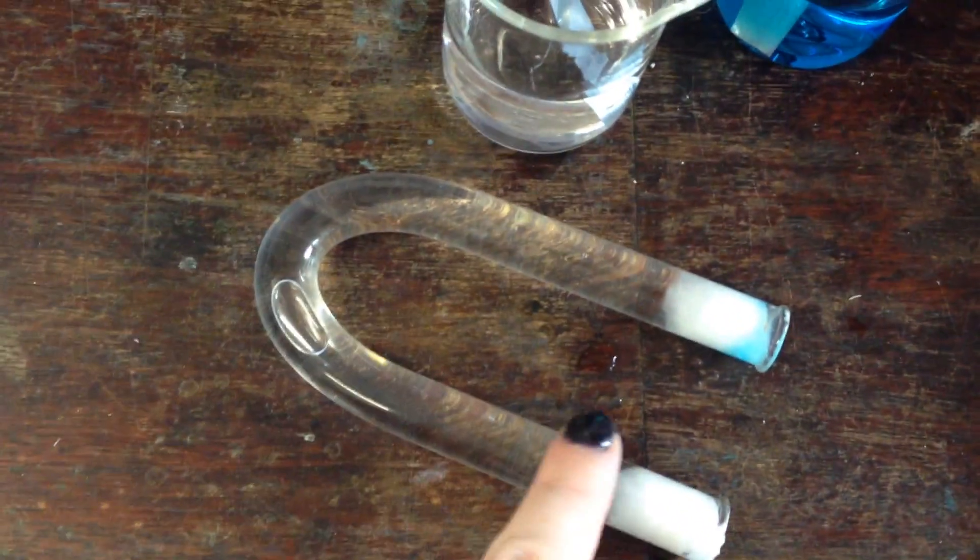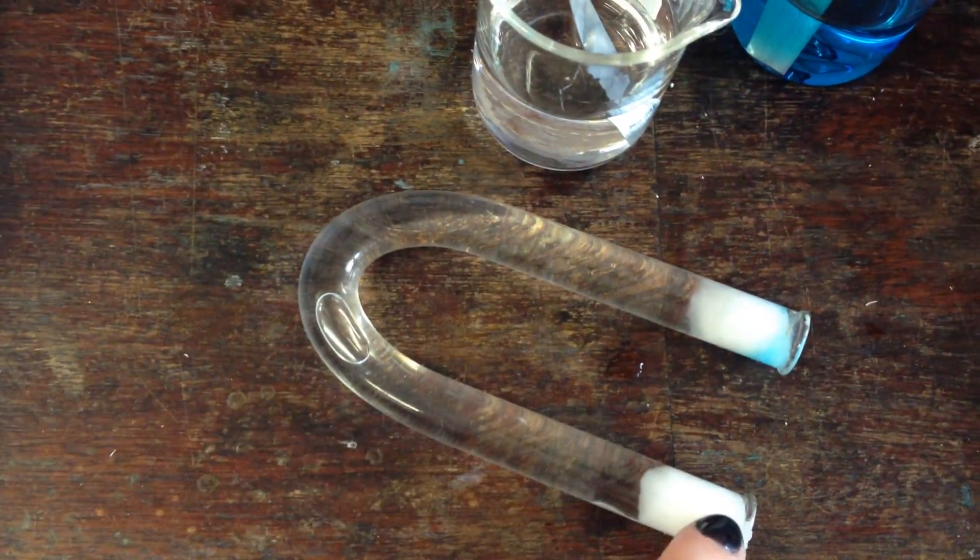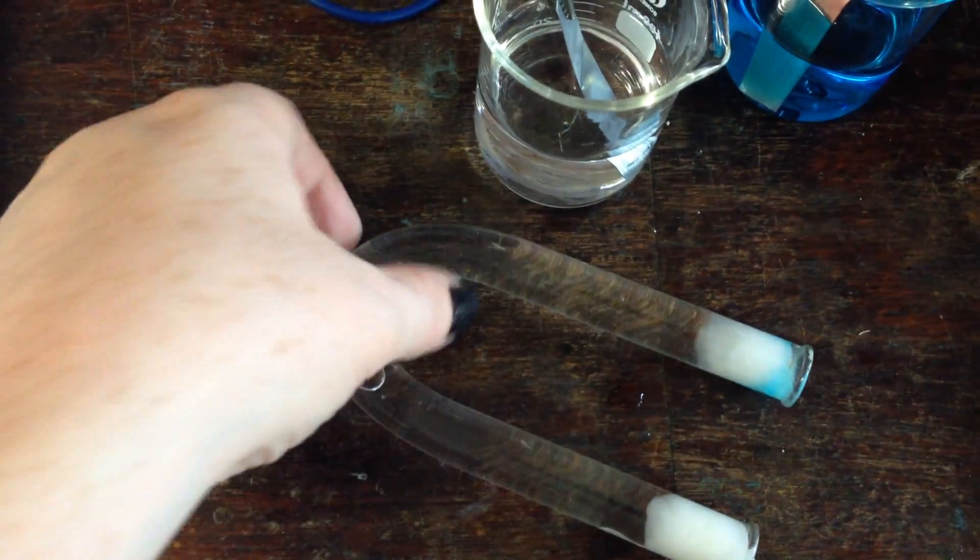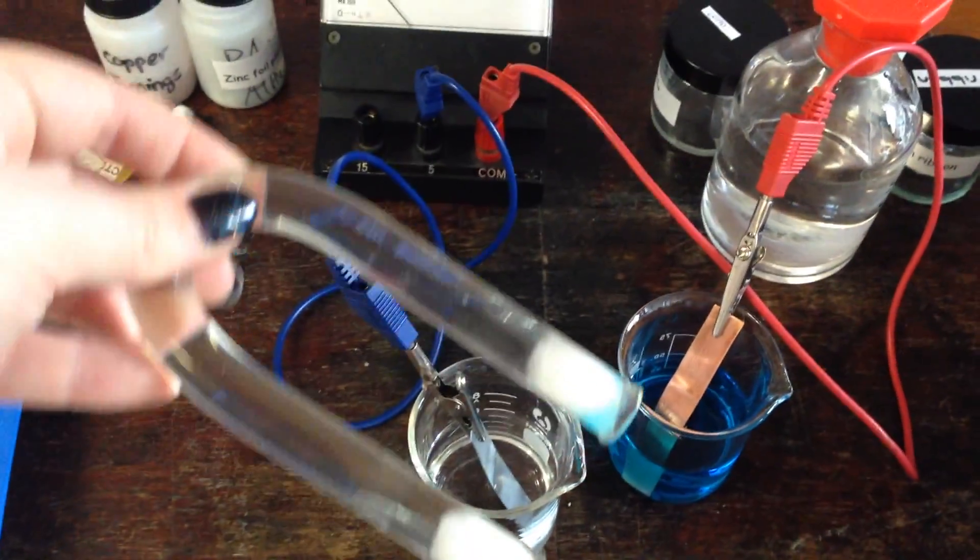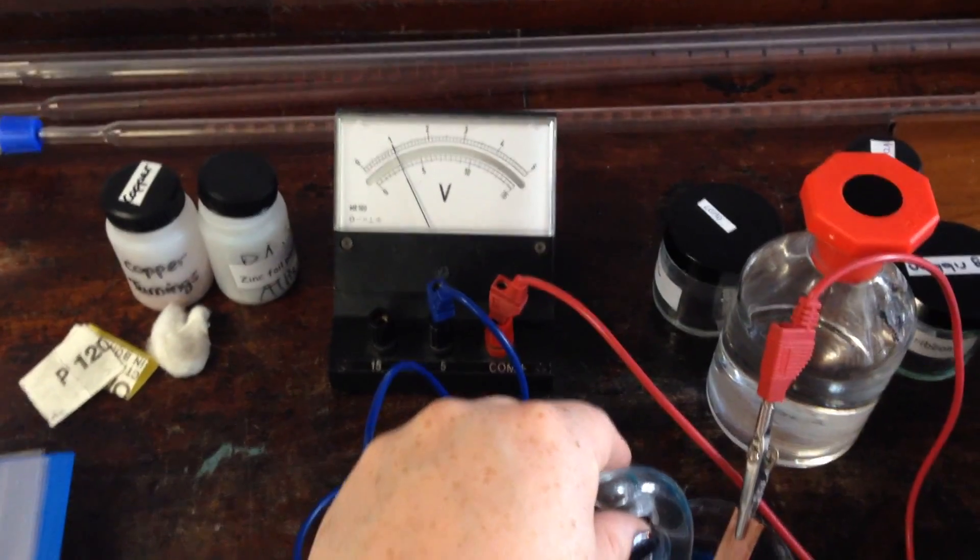Here I have our salt bridge. This is a plastic U-tube which is filled with sodium chloride and stoppered with cotton wool at either end. So I'm just going to pop this in here and then hopefully we should see a reading on our volt meter.